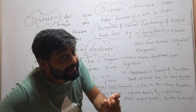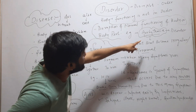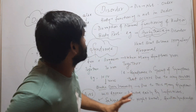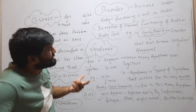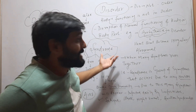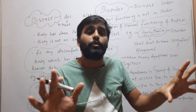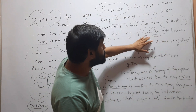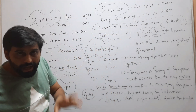Normal functioning of the heart is to beat at a regular pace, but due to arrhythmia the heartbeat becomes irregular. So this is disorder — disruption of normal functioning of the body or body part. This disorder may have any reason; it may be due to any disease or some other reason.